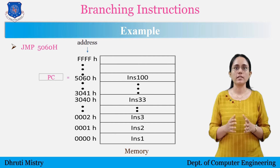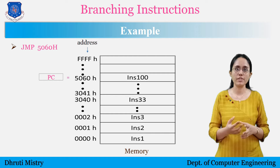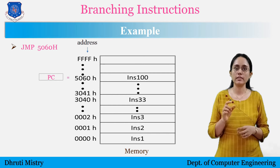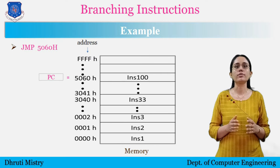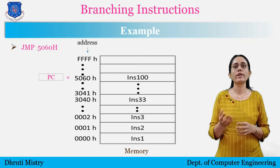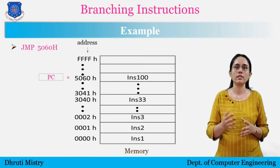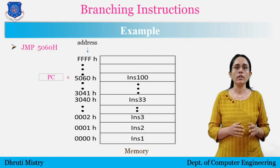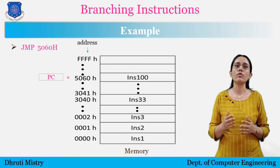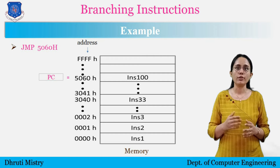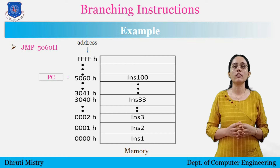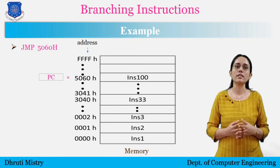Before the PC changes, the instruction that follows the jump instruction in memory is fetched and executed. Before any change, the PC is 3040H. After that instruction executes, the next instruction to execute is the one that was jumped to — meaning control transfers to the 5060H location. Call and return instructions are a type of branch instruction used to execute subroutines, and these instructions with examples were covered in our previous video of this tutorial series.